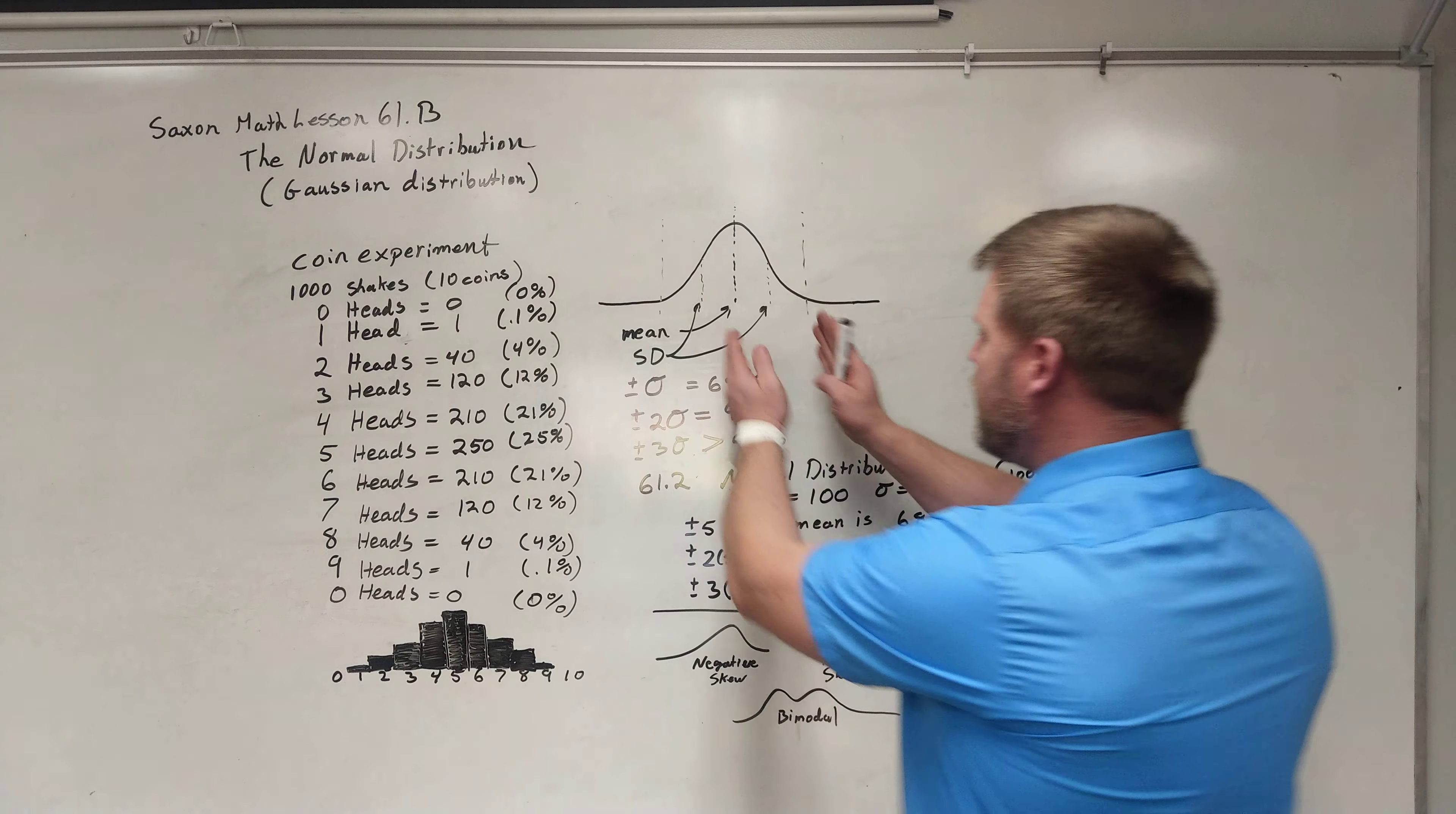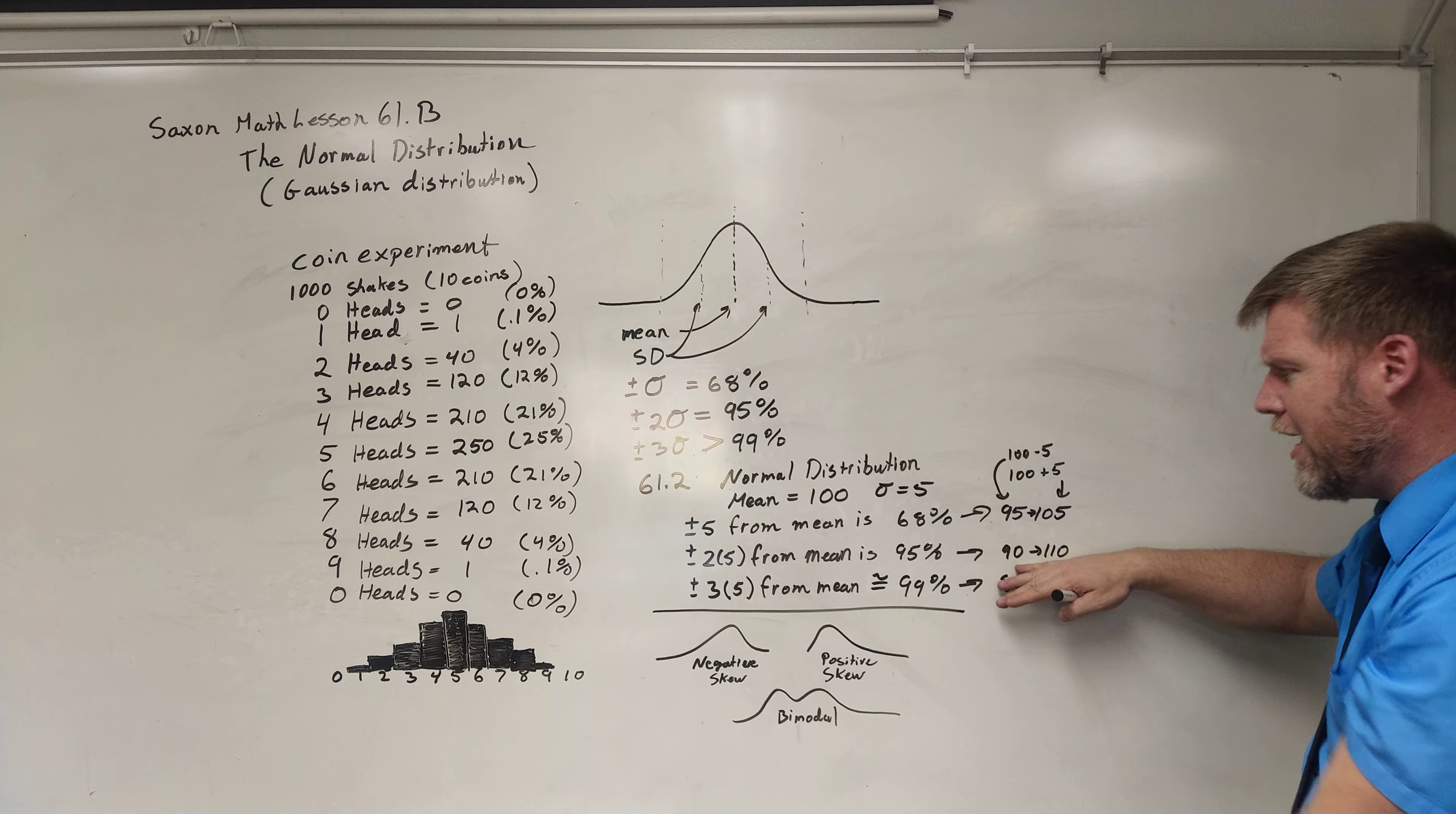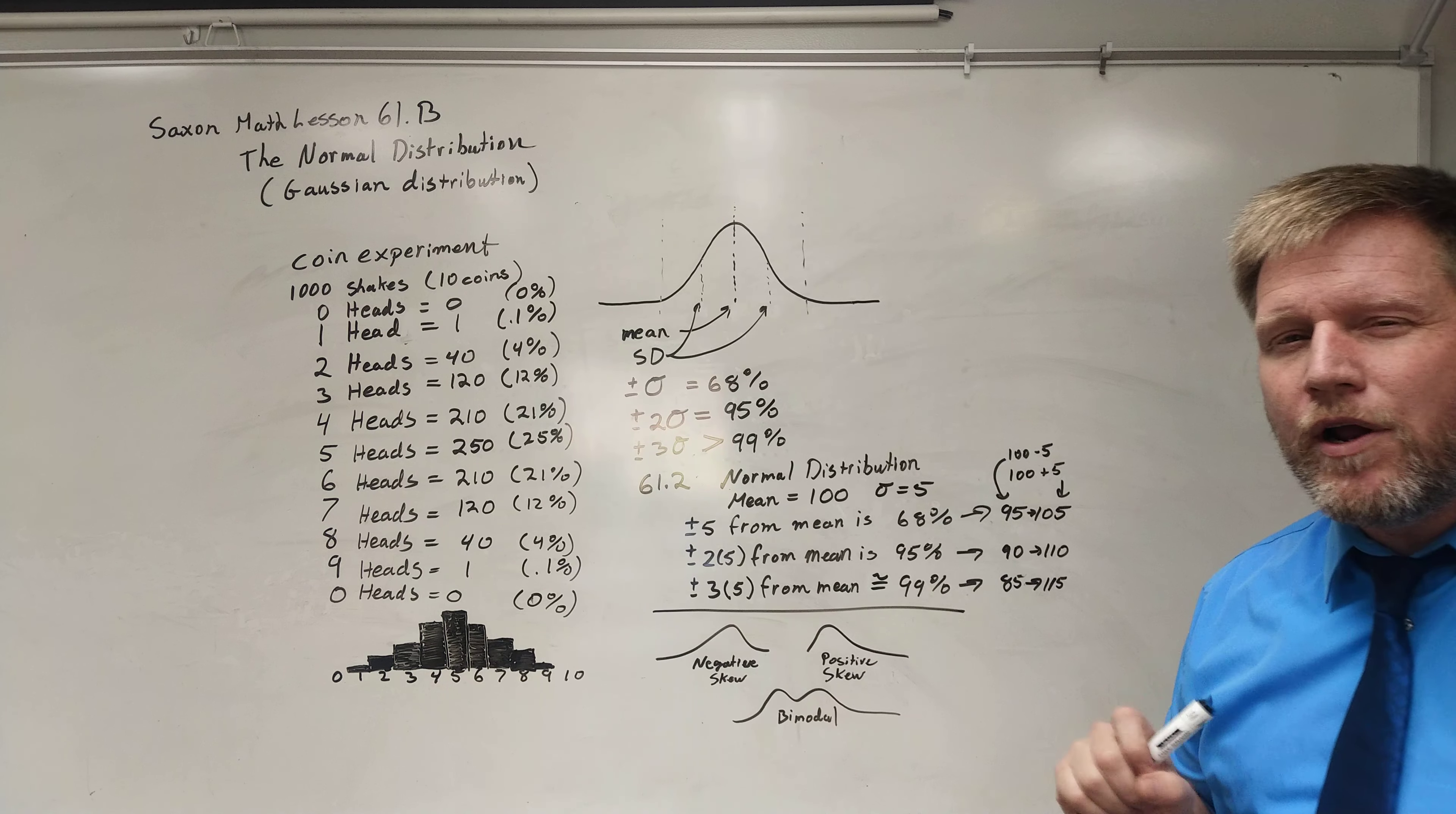If I look at two standard deviations, we'll go here and we said 100 and then we said plus 5 is 105 plus 5 more. That's two sigmas. That's 110. And then 100 minus 10 is 90. So 90 to 110 is going to represent 95% of the data. That's what we're looking at. 95% of that data for a standard normal distribution will lie between 90 and 110.